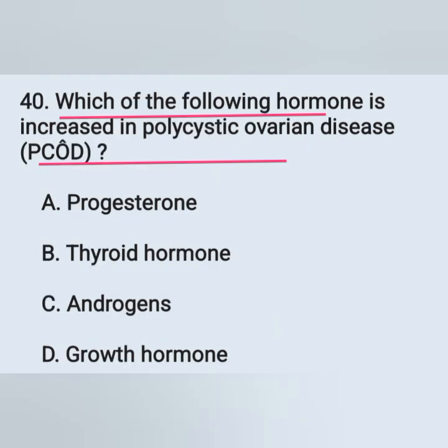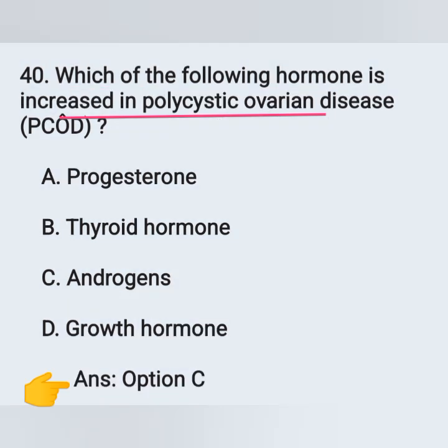Question 40: Which of the following hormones is increased in polycystic ovarian disease (PCOD)? Options: option A, progesterone; option B, thyroid hormone; option C, androgens; option D, growth hormone. The hormone which is increased in PCOD is androgens. Option C is the correct answer.